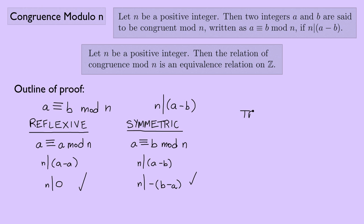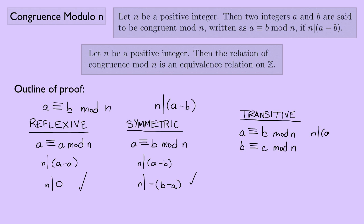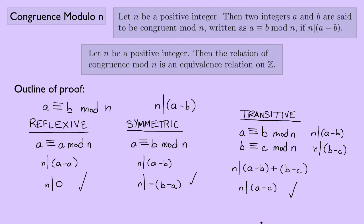For transitive, I start with two assumptions: a ≡ b (mod n) and b ≡ c (mod n), and I need to show a ≡ c (mod n). This means n divides a minus b and n divides b minus c. Therefore n divides (a minus b) plus (b minus c), which simplifies to n divides a minus c. That's exactly what I needed to show.